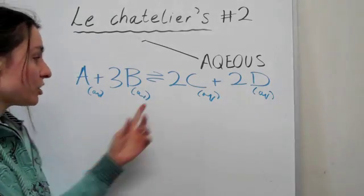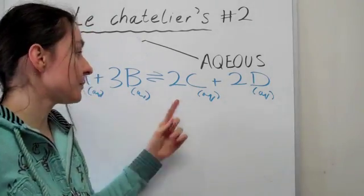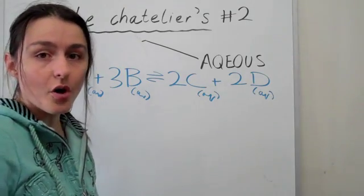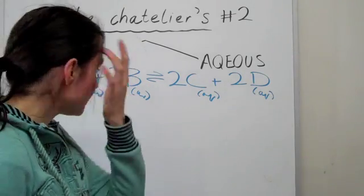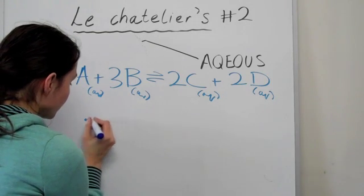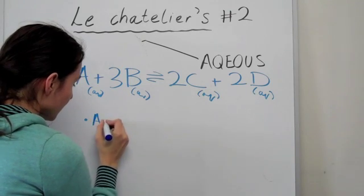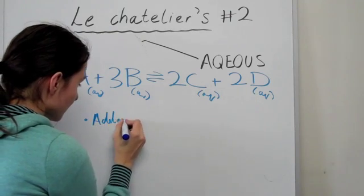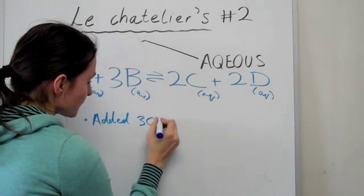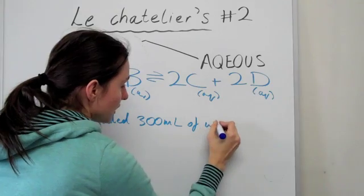if you change the pressure, it will have absolutely no effect on the system because a change of pressure only can affect gases. In this case, you can only change your volume by dilution. So let's have a look at 2 cases. Let's say you added 300 ml of water into the system.